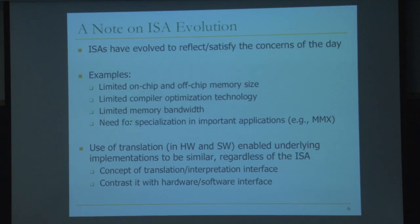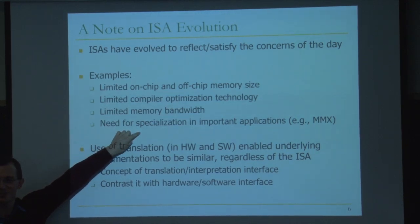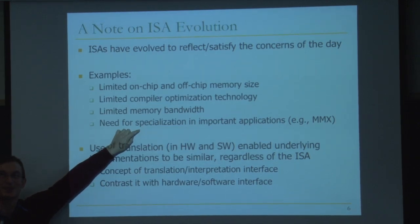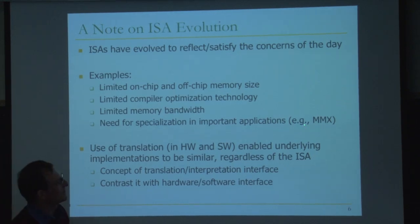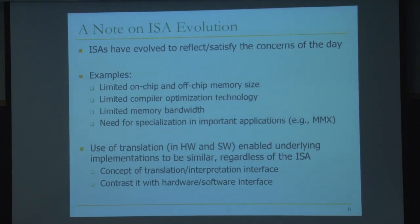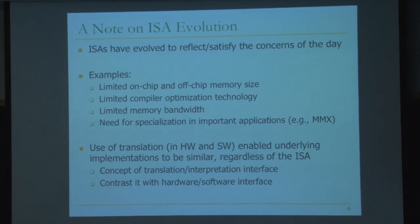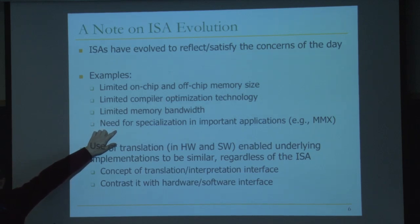Over time, the need for specialization in important applications has driven changes in the ISA. For example, the x86 ISA added MMX extensions — multimedia extensions — now SSE, streaming SIMD extensions, which enable processing for multimedia applications. These are a small-scale form of single instruction multiple data operation — you have an instruction that operates on multiple data elements. For example, adding two arrays together with a single instruction. There are also virtualization extensions to support virtual machines, reflecting that virtualization is important today.